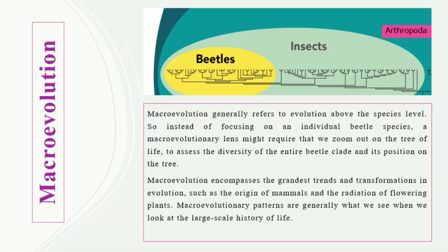Next, moving towards macroevolution: macroevolution is the evolution above the species level. Here we are going to talk about the evolutionary history or the evolution above the species level for different groups of organisms. In this figure, the yellow colored circle indicates the beetles, the green colored circle indicates the insects, and the blue colored circle indicates the arthropods.